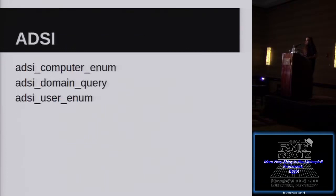ADSI — this one is very, very powerful, and I don't think it made as big a splash as it should have. It gives you direct query access to Active Directory Service Information. Basically you can query the domain controller for anything — computers, users, you can filter on whatever you want. It's basically an LDAP query. Computer enum lists all the computers, user enum lists all the users, domain query is the generic thing. Very useful if you want to show all servers, all workstations, or all users who belong to the finance group.